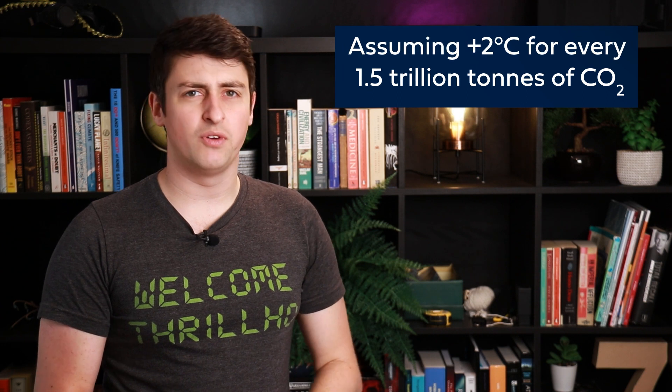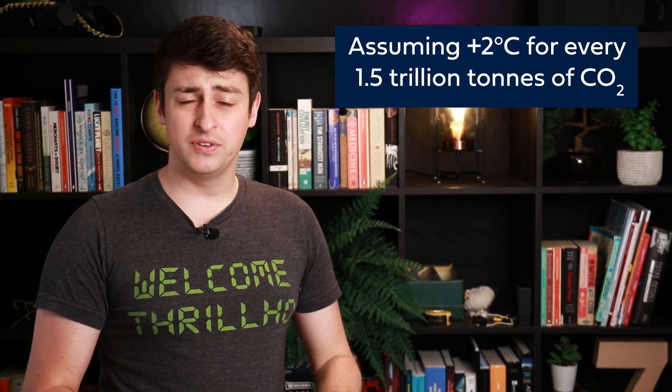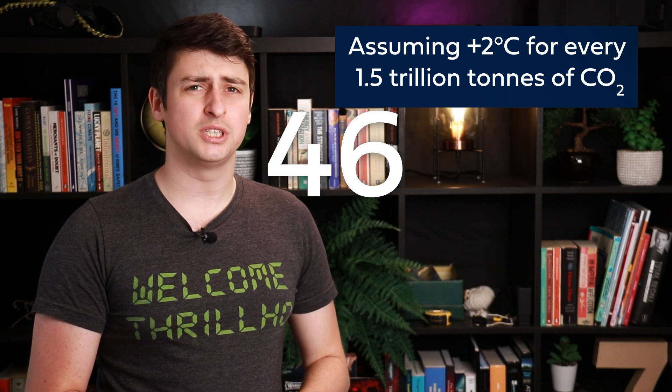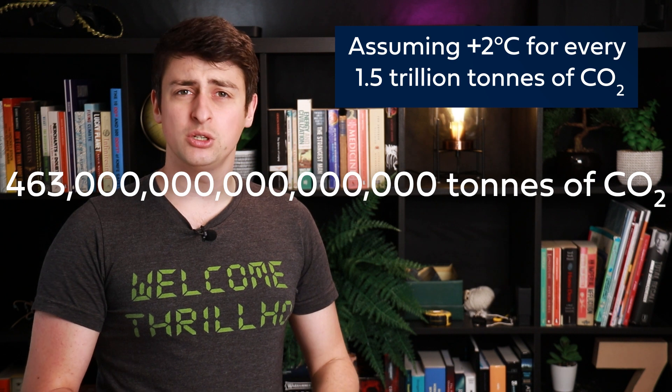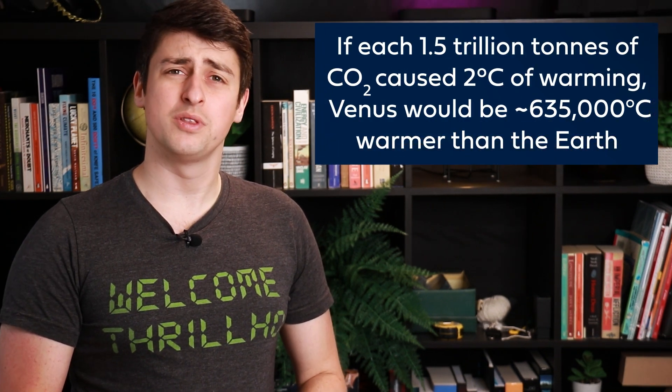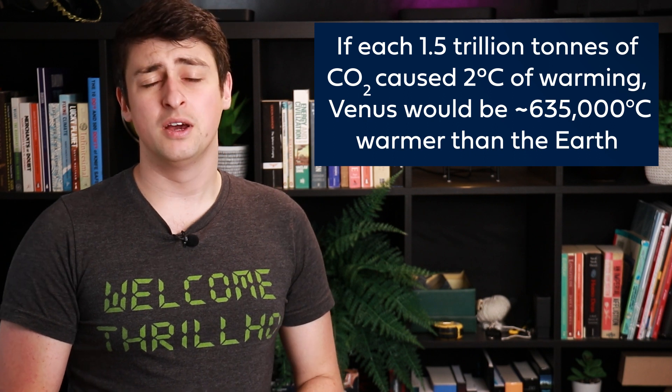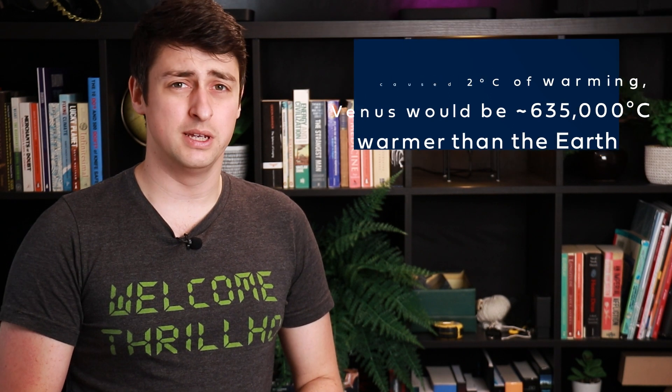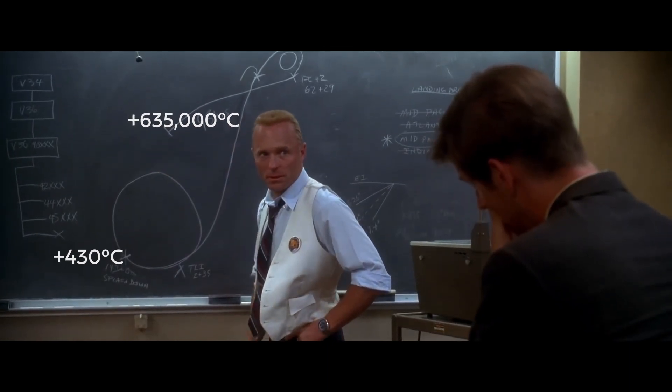But assuming a warming of, say, 2 degrees Celsius for every 1.5 trillion tons of CO2 in its atmosphere, Venus, with approximately 463 quadrillion tons of CO2 in its atmosphere, should be approximately 635,000 degrees warmer than the Earth, rather than the puny 430 degrees warmer that we observe it to be. Gentlemen, that's not acceptable.